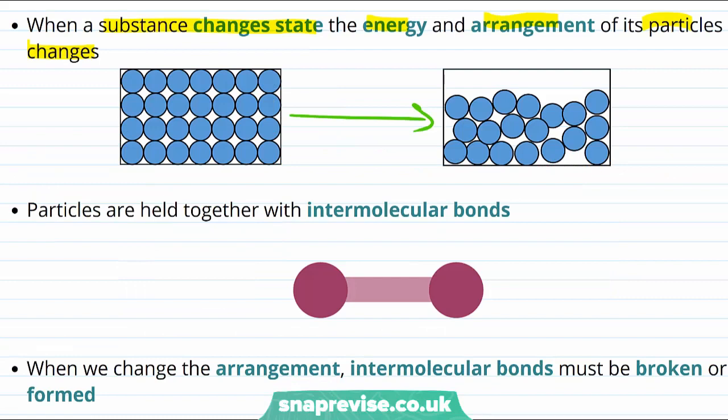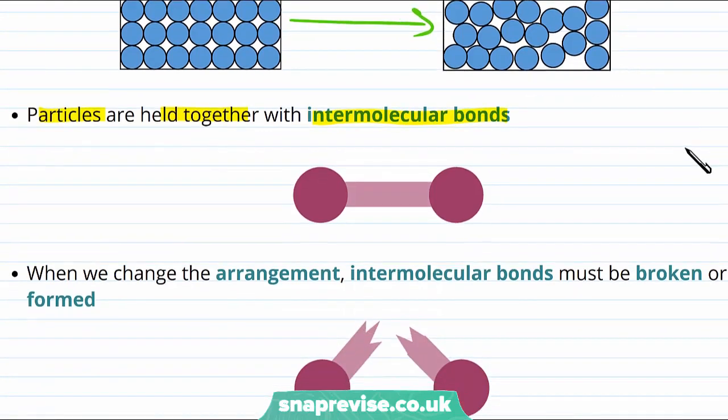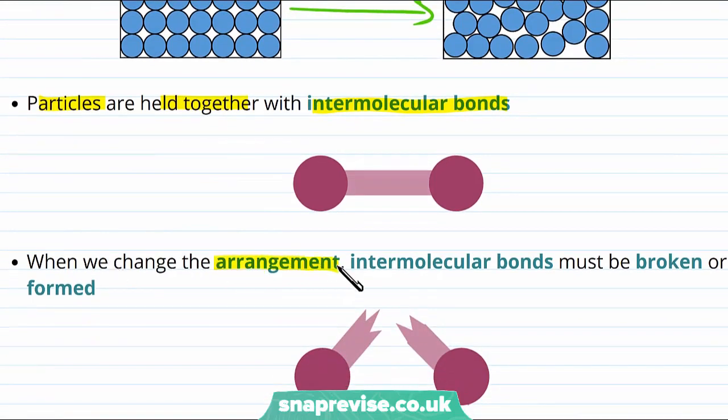So how does this change in arrangement actually happen? Well, particles are held together with things called intermolecular bonds. And when we change the arrangement, intermolecular bonds must be broken or formed.